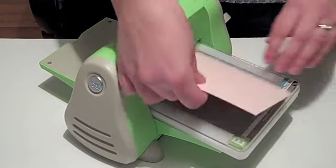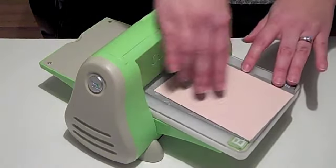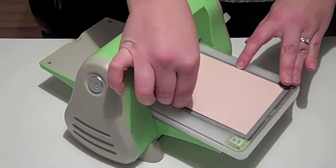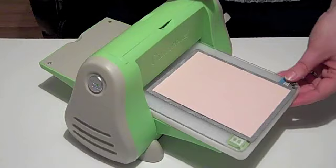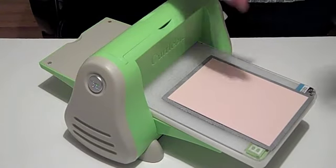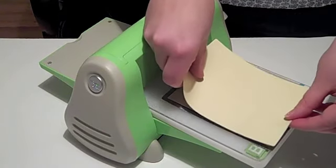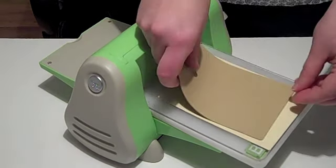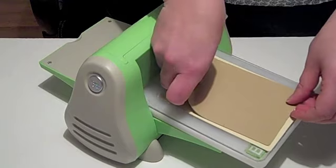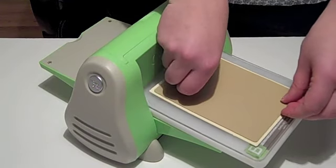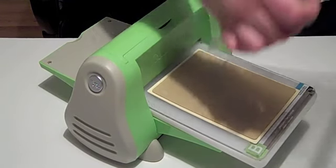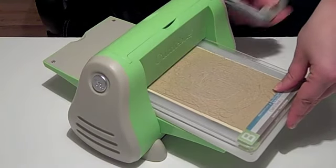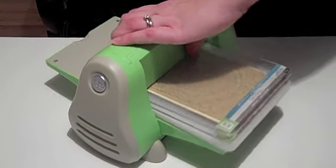Then I'm going to take my cardstock that I've already trimmed to size for my card cover and center it right on the impression plate like so, followed by our vanilla mat which is cut to the exact size of the plate, and then the tan mat right on top of that, followed by a second B plate. You then want to just roll it through the machine like so.